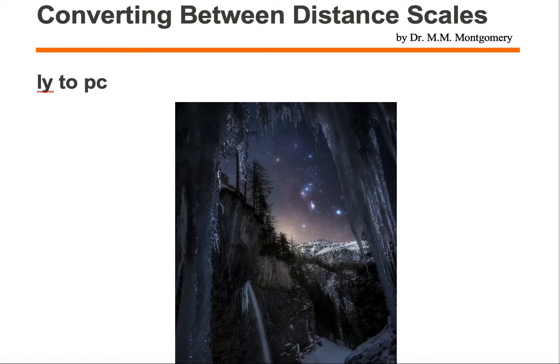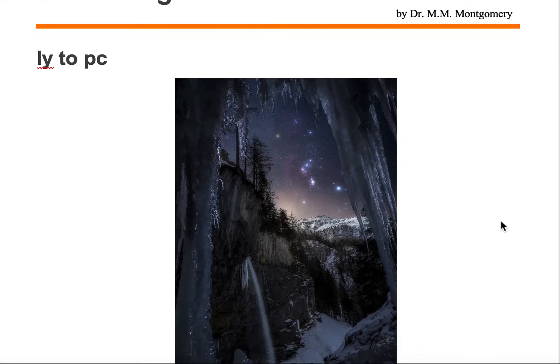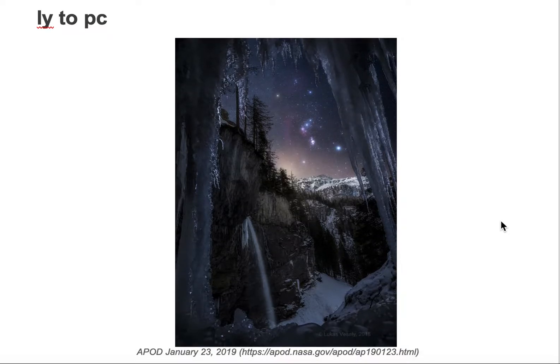Let's look at converting between distance scales and do an example. Let's say we want to convert from the unit of light years to parsecs, and now we need to pick a target. We're going to pick this target in the Orion constellation known as Rigel.